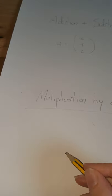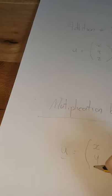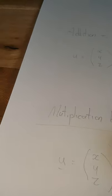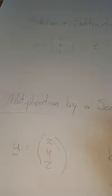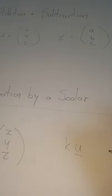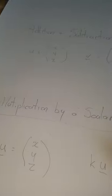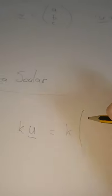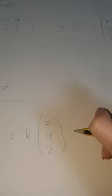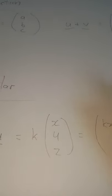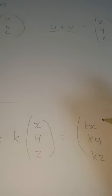Same for multiplying. If I have a vector u with components x, y, and z, and I want to multiply it by a scalar value k, then k times u simply means multiplying all the components of u by the number k — so I get components kx, ky, and kz.